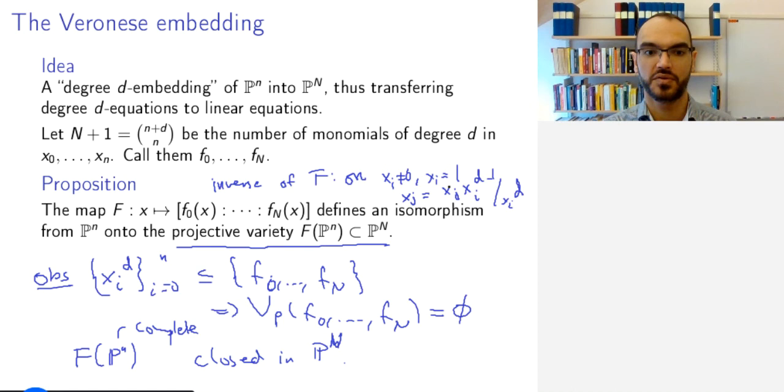So this map is indeed an isomorphism. We can view P^n inside P^N through an embedding of degree d.